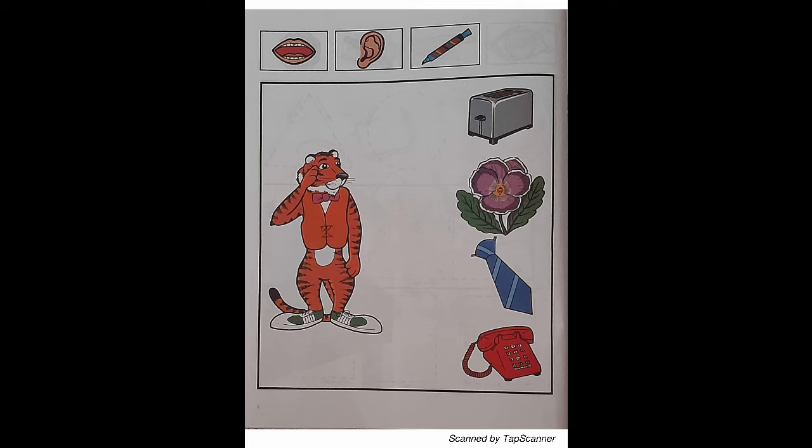Listen to the T sound. With your blue marker, draw a line from tiny tiger to the pictures beginning with the T sound.